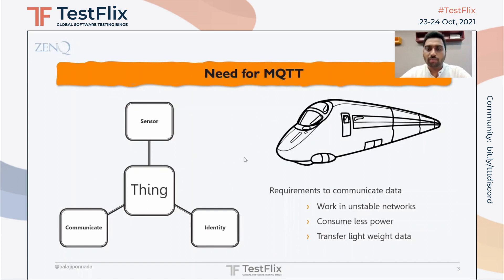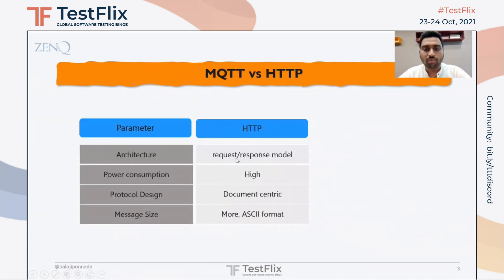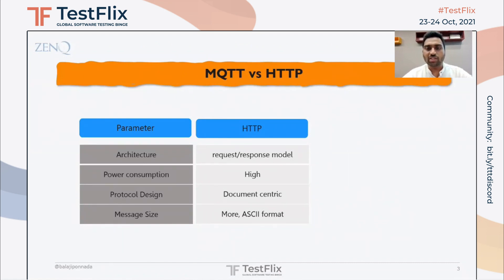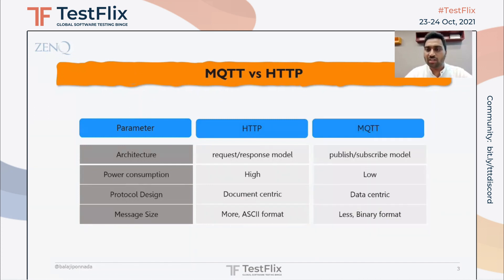HTTP protocol will not meet these requirements, as it is built on top of a request-response model. For data to be transferred between client and server, a handshake process needs to be established, which leads to high power consumption to establish and keep the connection alive. Additionally, HTTP is built for document-centric data transfer, meaning you can transfer huge data and the message size would be large. This is why there is a need for a different protocol that suits these requirements, and MQTT is one such protocol.